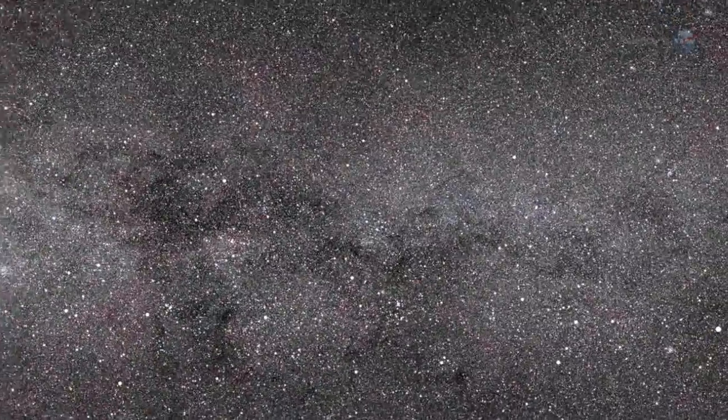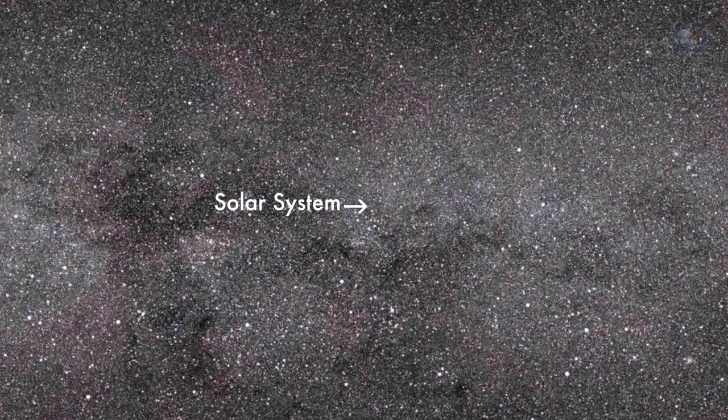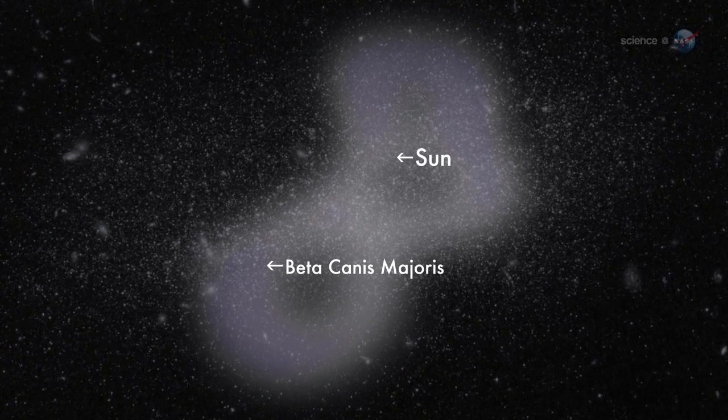Obviously, those supernovas were not close enough to exterminate life on Earth, but they were close enough to wrap our solar system in a bubble of hot gas that persists millions of years later.